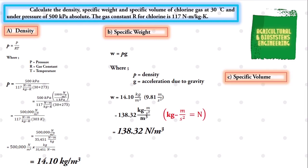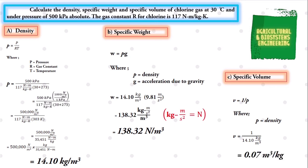Finally, we solve for specific volume. The formula is: specific volume equals one over the density. Substituting the density value of 14.10 kilogram per cubic meter, we simply solve and get a final specific volume of 0.07 cubic meter per kilogram. That is the solution for determining density, specific weight, and specific volume of chlorine gas.